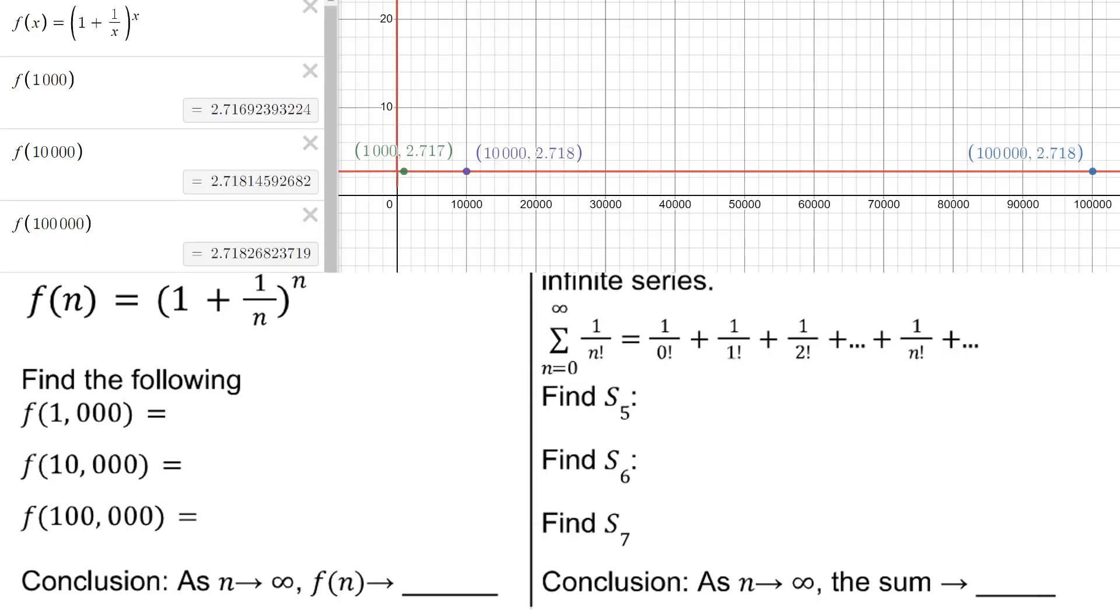Then we can calculate f(1,000) = 2.7169239 and so on. f(10,000) = 2.71814592 and so on. And f(100,000) = 2.71826823 and so on.